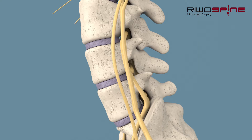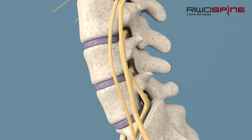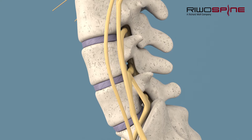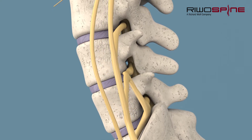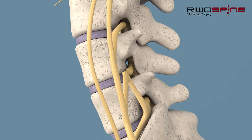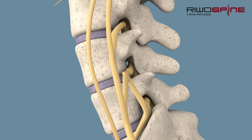One of the most frequent causes of leg and back symptoms is the herniated disc. Here, high forces can cause the outer fibrous ring to rupture and the fibers and core material to exit into the spinal canal.